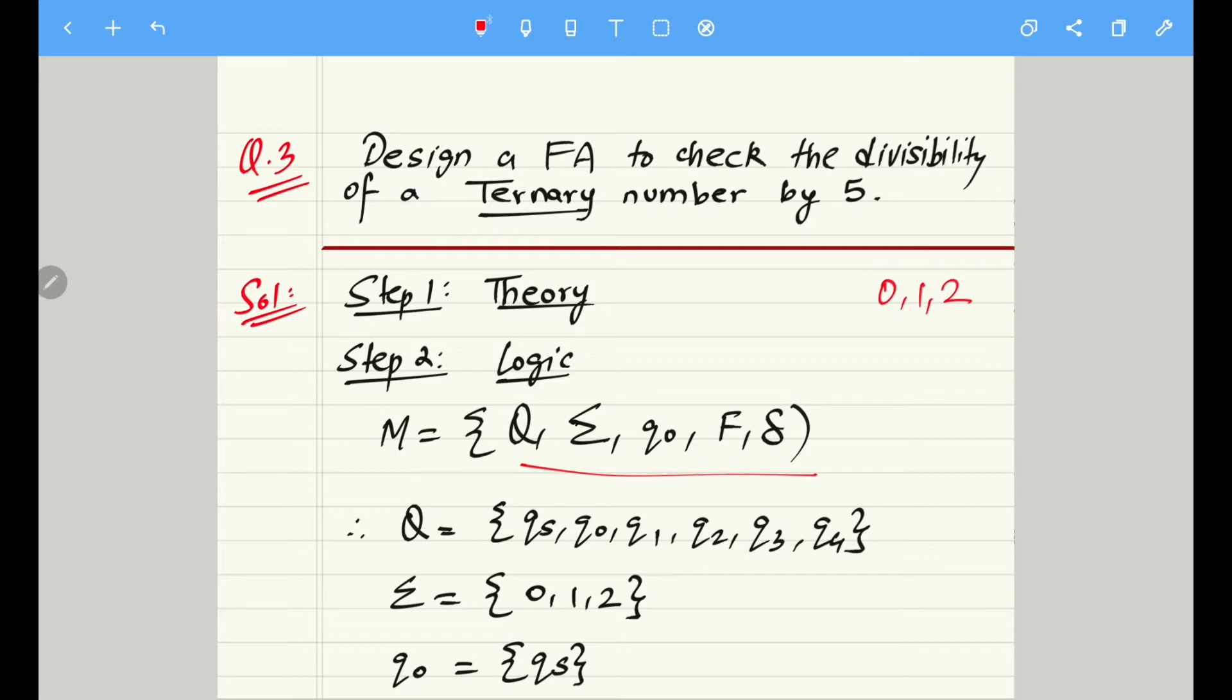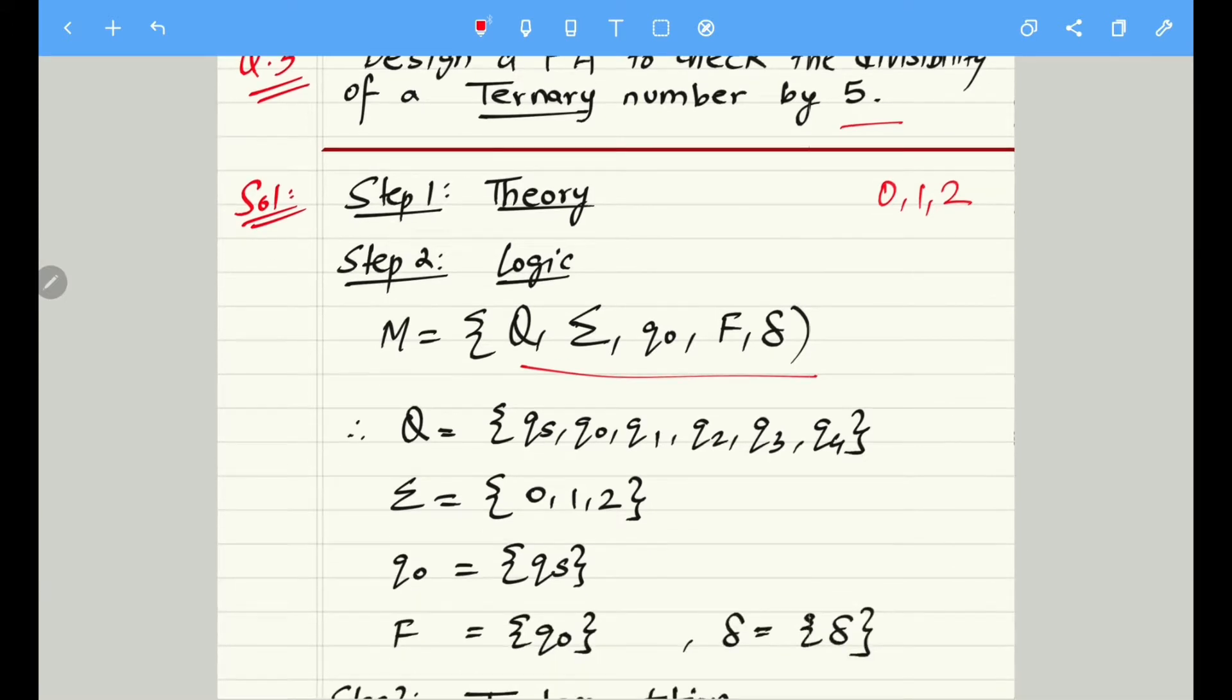Ternary numbers are nothing but 0, 1, and 2. In the previous video we saw that binary numbers are 0 and 1. So we created a finite state machine to check the divisibility of a binary number by 4. In this case we are doing exactly the same thing for ternary numbers, but the number which we are dividing is 5 this time.